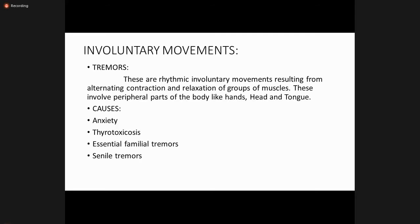Regarding involuntary movements: tremors are rhythmic involuntary movements resulting from alternating contraction and relaxation of a group of muscles. They typically involve the peripheral parts of the body, such as the hands, head, and tongue. Causes of tremors include anxiety, thyrotoxicosis, essential familial tremors, and senile tremors.